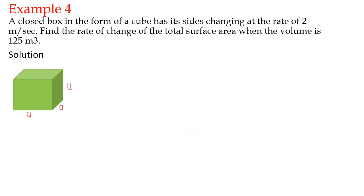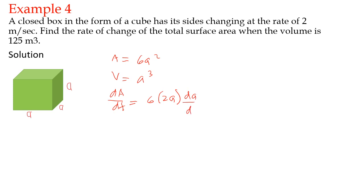A closed box cube has its sides changing at the rate of 2 meters per second. Find the rate of change of the total surface area when the volume is 125 cubic meters. Solution: Area equals 6a squared, volume equals a cubed. dA over dt equals 12a times da over dt equals 12a times 2.